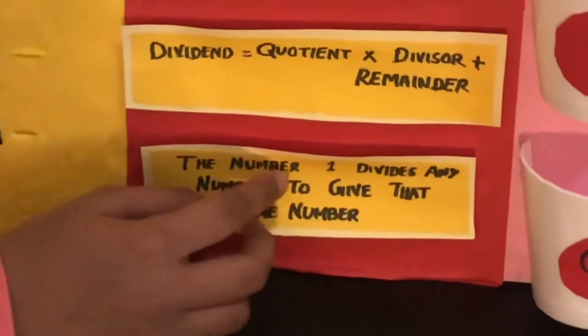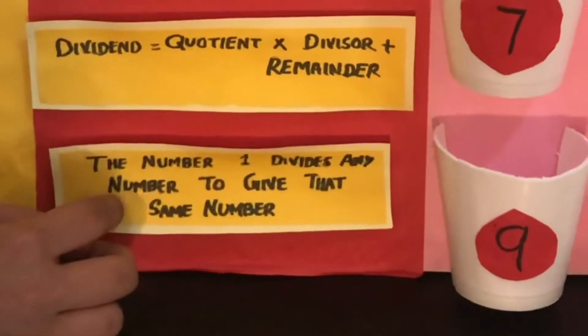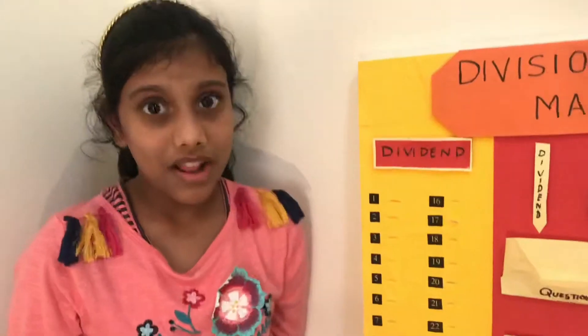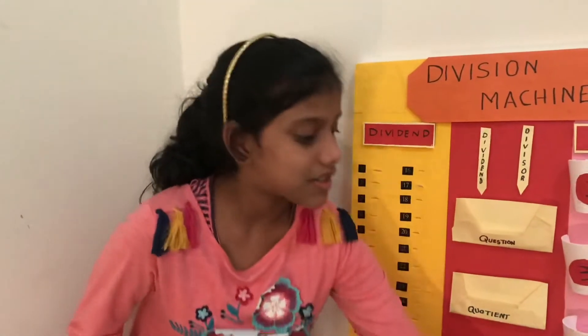The number 1 divides any number to give that same number. For example, 5 divided by 1 equals 5. Let's take a question from this box.